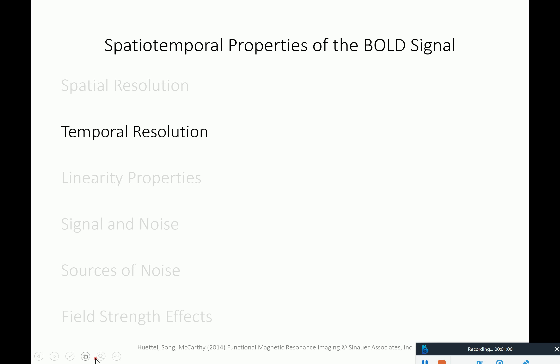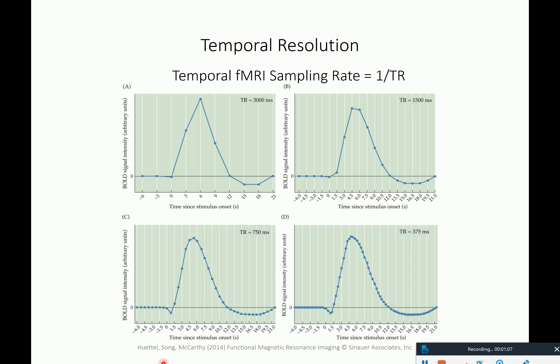The next thing would be temporal resolution, which is essentially what I asked you in the last session. The basic temporal resolution of fMRI is given in terms of the sampling rate, and the sampling rate depends on how many pictures you take per second. The time between the onset of taking each of these pictures is the time to repetition, or TR.